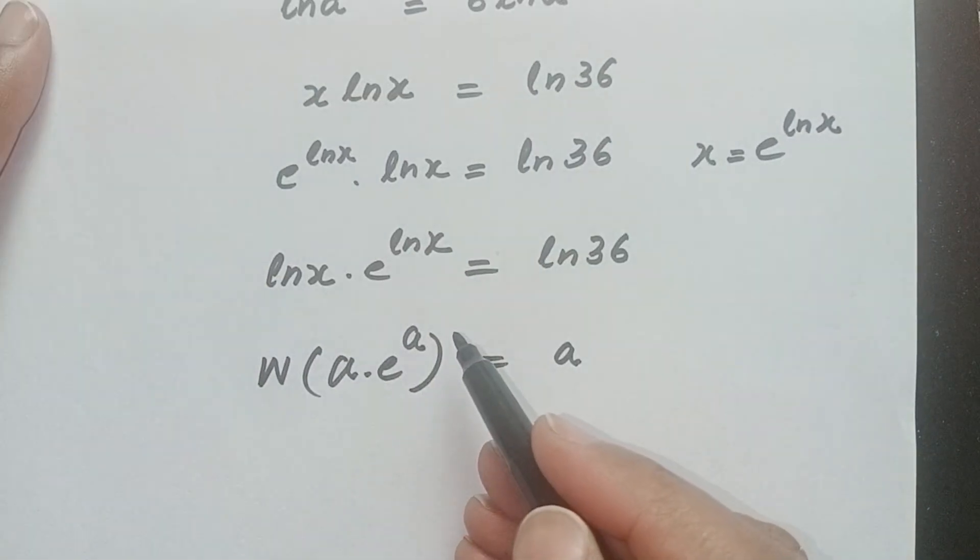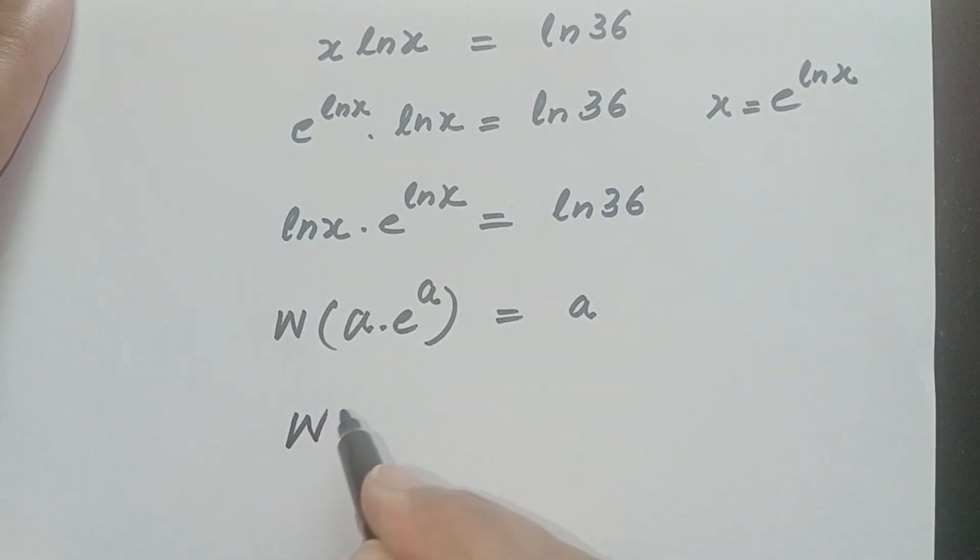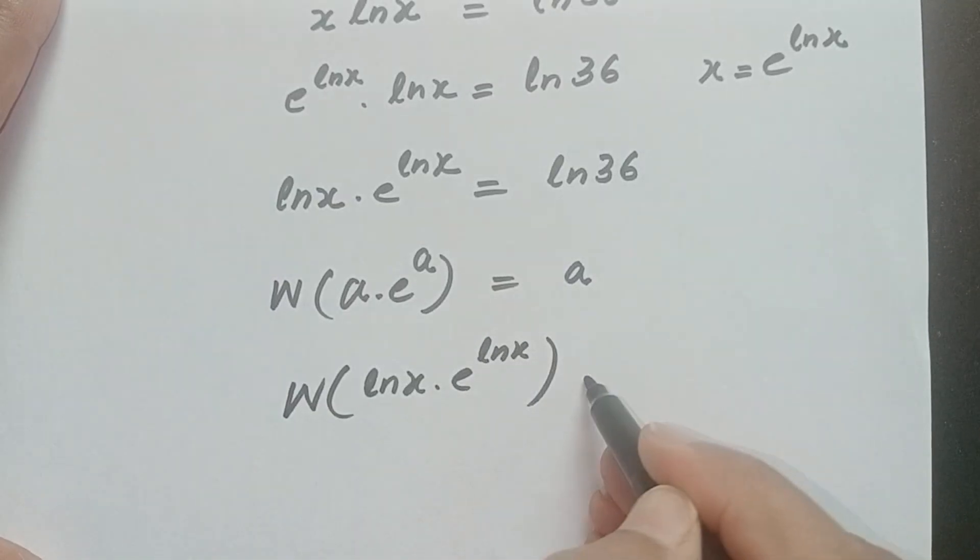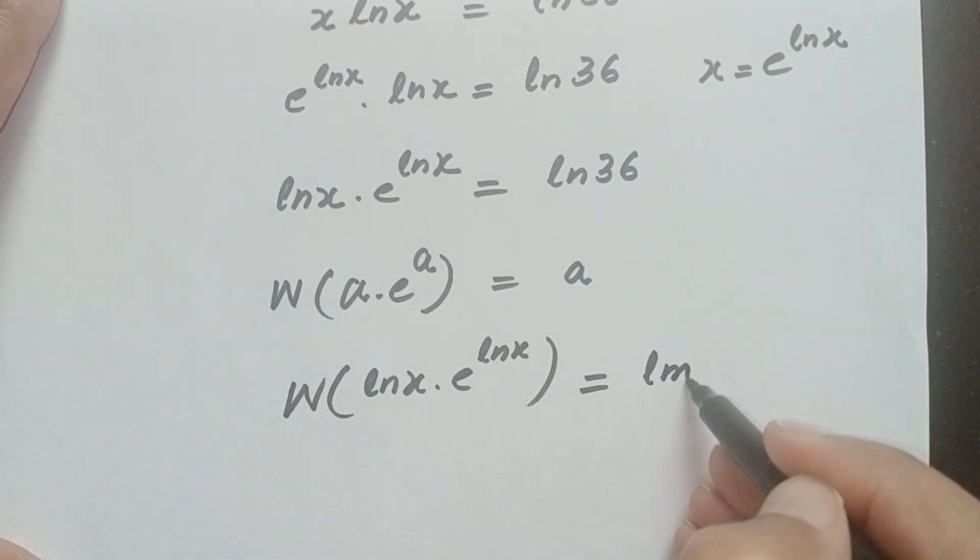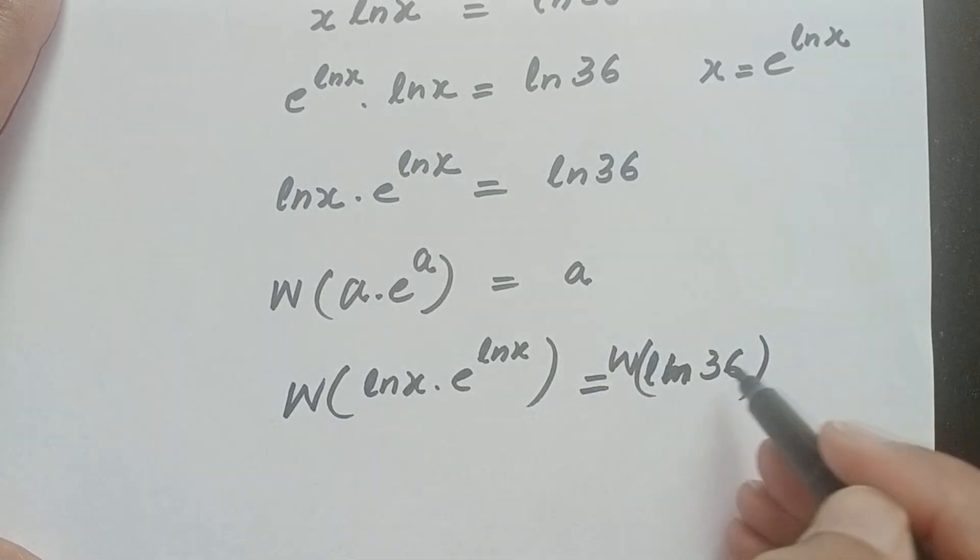So we can apply Lambert W function here. Lambert W function: ln x times e power ln x is equal to ln 36. Lambert W function of ln 36.